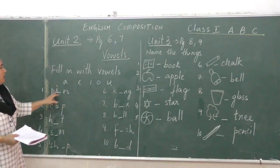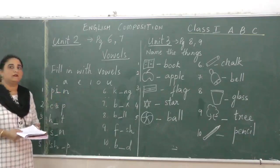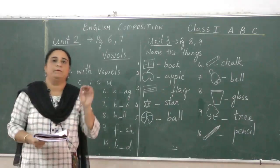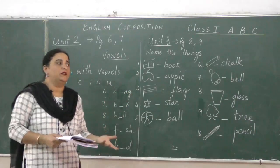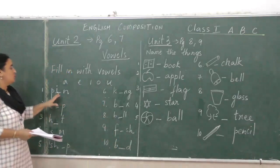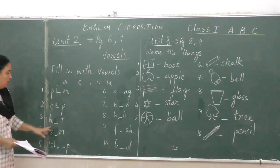So if you put P-A-N, PAN, that is also correct. If you put P-I-N, PIN, that is also correct. If you put P-E-N, PEN, that makes sense. That also is a word, it is the name of a thing. So you have to put the correct vowel into the blank to make the proper word.